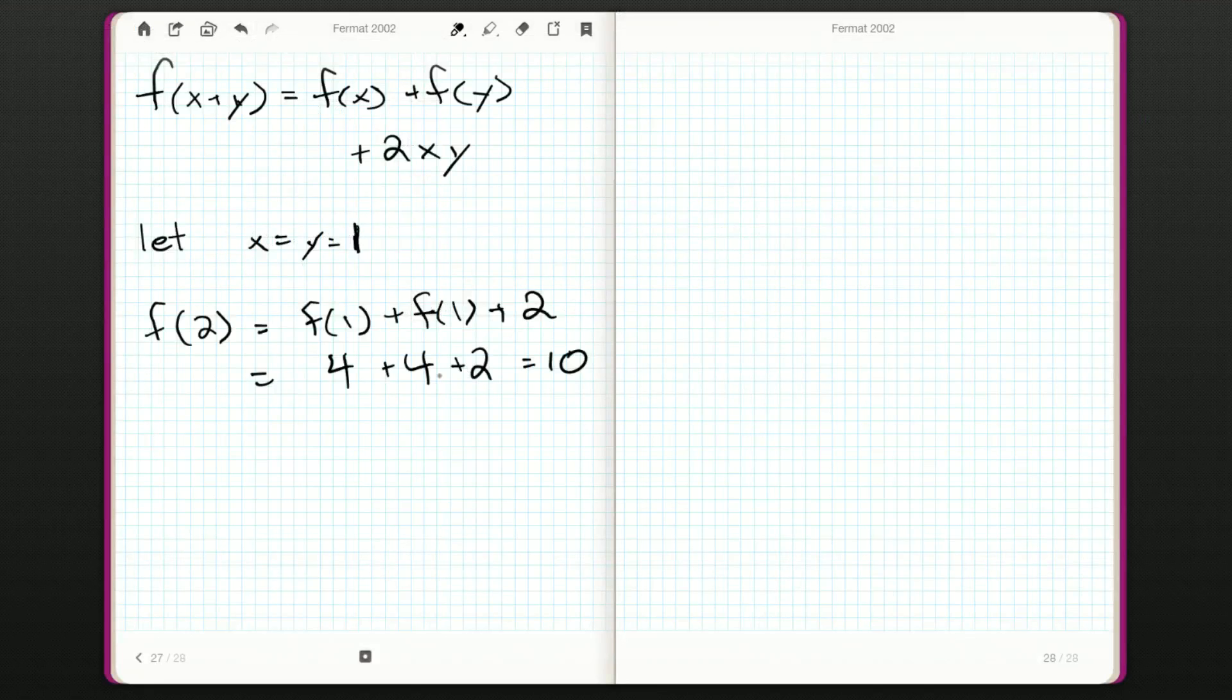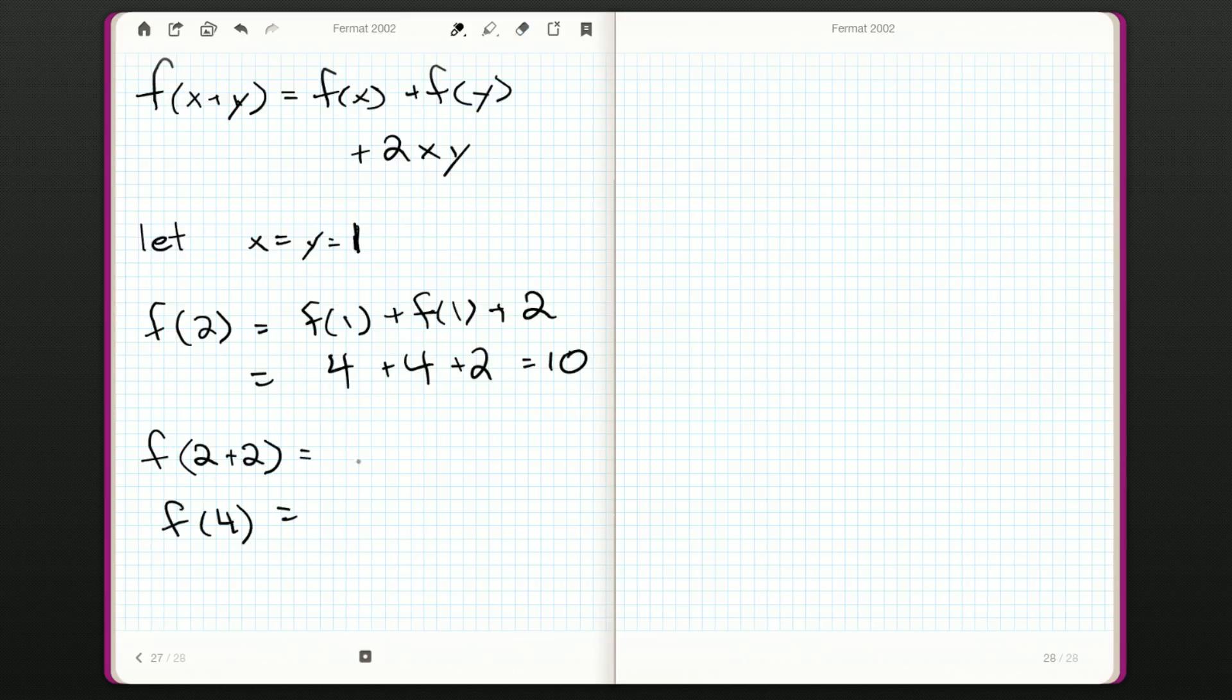All right. So you could do f of 2 plus 1 and get f of 3, and if you do this you're going to be doing six more calculations for a total of seven calculations to get f of 8. But we can be a little clever about it. We can use both of these: f of 2 plus 2, which is just f of 4. And now we're halfway there. We skip over calculating f of 3.